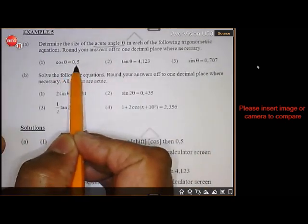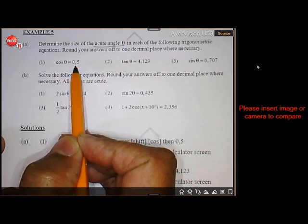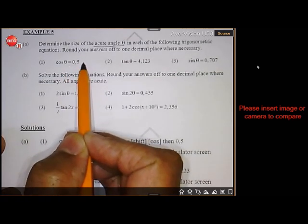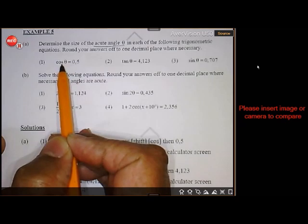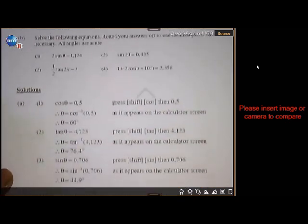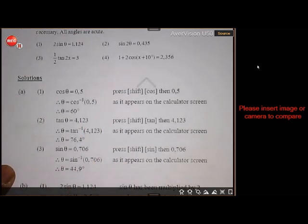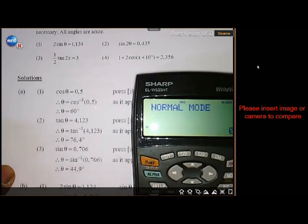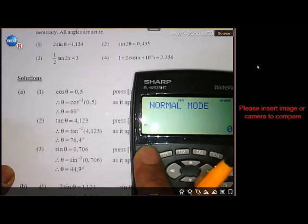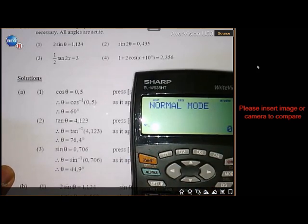So if you look at cos of theta equals 0.5, then you know the ratio is given, and you must find the angle. So if you look at the solution, then of course on the calculator, you remember, whether you use a Casio or Sharp, doesn't matter.